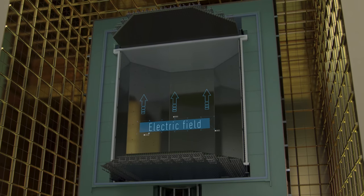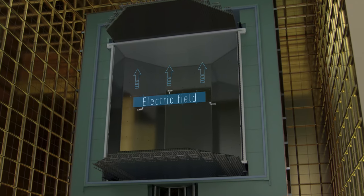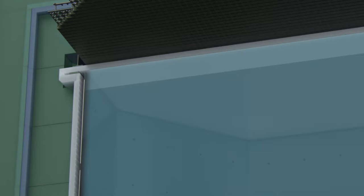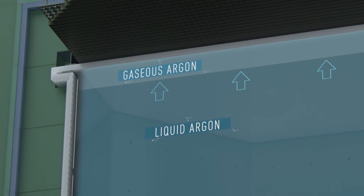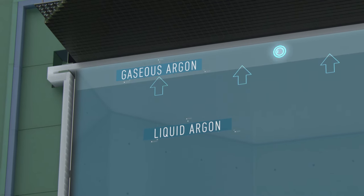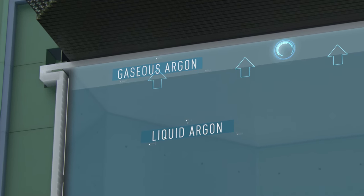A uniform electric field is applied to drift the free electrons upward to the surface of the liquid argon. There, another electric field is applied to pull the free electrons into the gaseous argon, where they produce secondary scintillation photons by a process called electroluminescence.